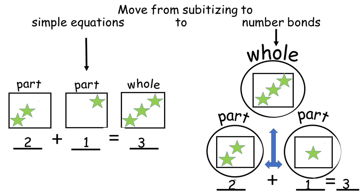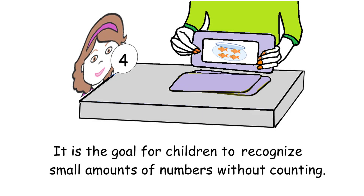After we teach kids subitizing, we're going to move to simple equations and then to number bonds. Our first teaching goal in this video is to have kids recognize small amounts of numbers — 0, 1, 2, 3, 4, and 5 — without counting.